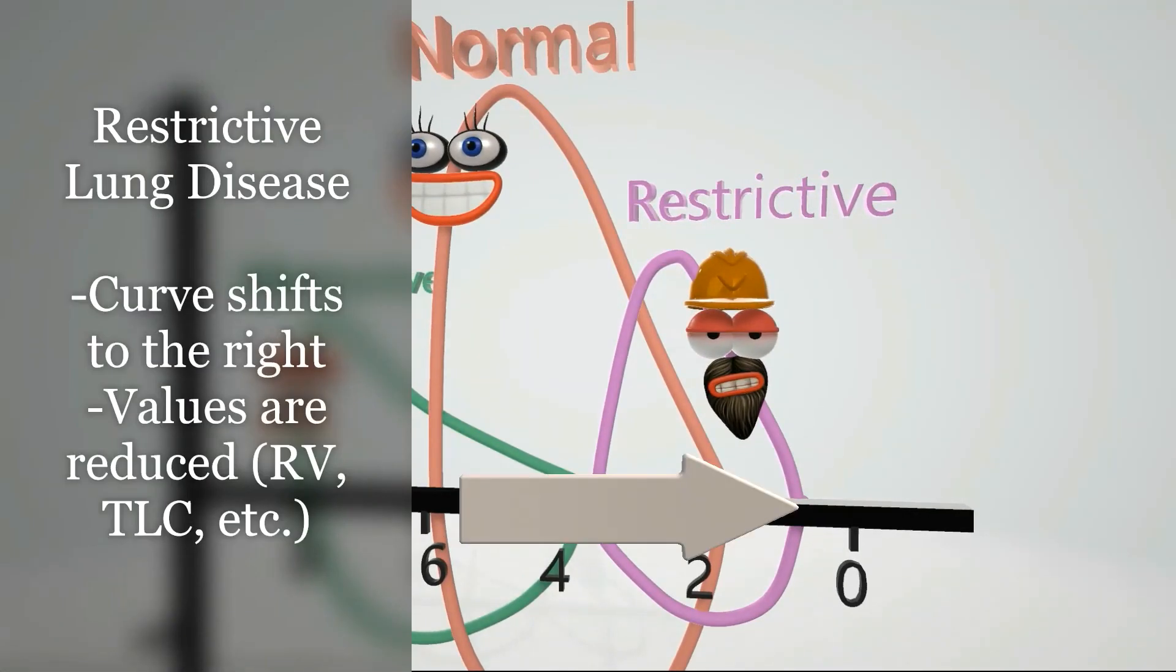Due to the restriction, for example, due to fibrosis and loss of compliance, everything is reduced. Residual volume is reduced, total lung capacity is reduced. Every value is reduced, and that's why the curve shifts to the right.